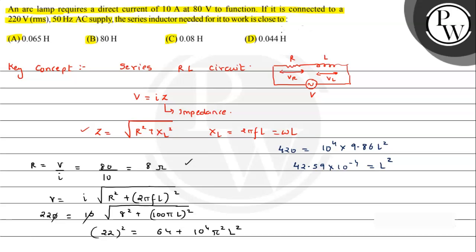On further simplification, if we take the root of this, so this will be 10⁻². This value will be—therefore L we can write 6.53—and this will be in henry. So finally this value can be written as 0.0653 henry.